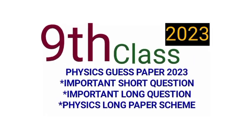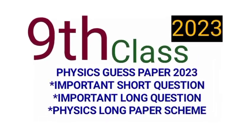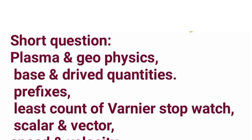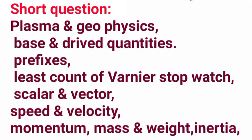9th class physics guess paper 2023 — important short questions and important long questions. Short questions: define plasma and geophysics, define base and derived quantities, define prefixes, least count of vernier caliper and stopwatch, define scalar and vector, differentiate between speed and velocity.